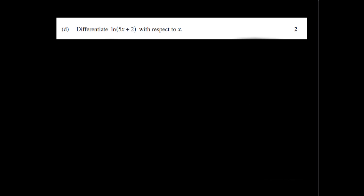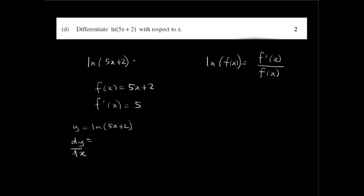Okay, so question 1d is asking us to differentiate ln of 5x plus 2 with respect to x. Now, when we're differentiating ln of a function, so ln of f of x, the answer would be the derivative of that function over the function. So in this case, the function is 5x plus 2. The derivative of the function is 5. Okay, so if y equals ln 5x plus 2, dy dx, the differential of ln 5x plus 2, would be the derivative of 5x plus 2, which is 5, over the function itself, which is 5x plus 2.